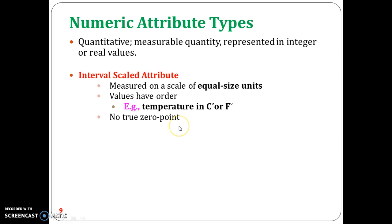However, consider whether you can give a calendar date of zero or a temperature of zero — practically it is not possible. No temperature can be zero; no calendar date can be zero. So in interval-scaled attributes, you do not have any true zero point, which is a drawback.